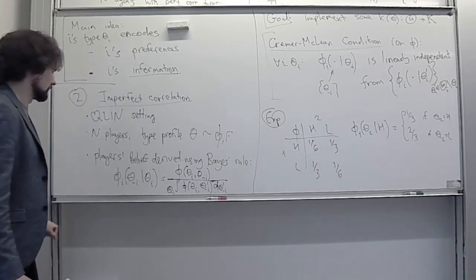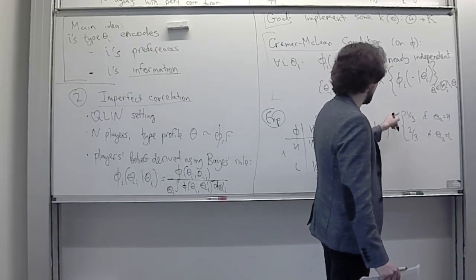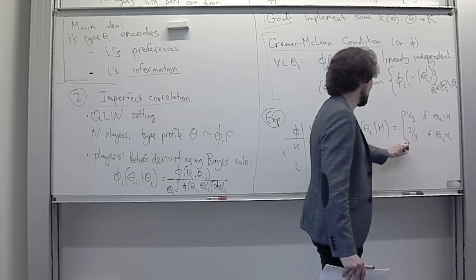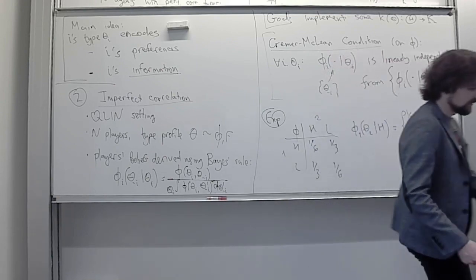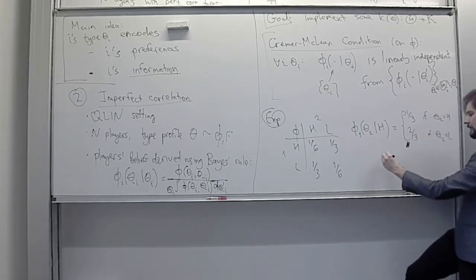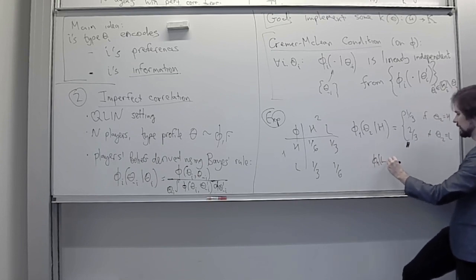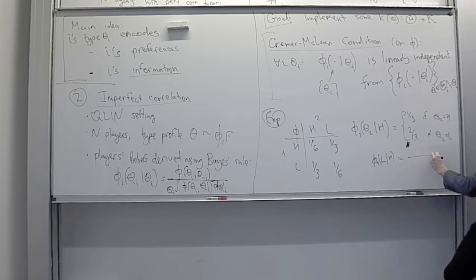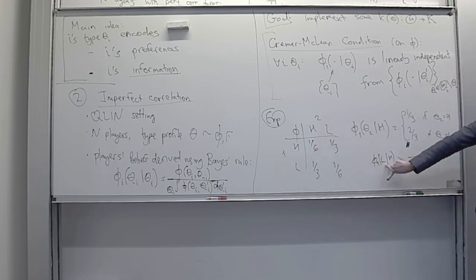So if player one has a high type, the belief profile is (1/3, 2/3) — probability 1/3 for player two being high type, and 2/3 for low type. If player one has a low type, the beliefs are exactly the other way around: 2/3 for high type at the top and 1/3 for low type at the bottom.